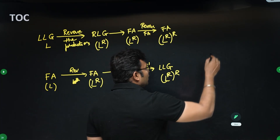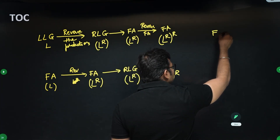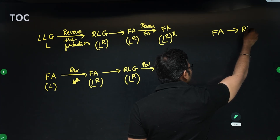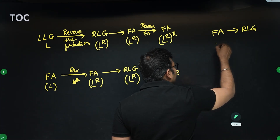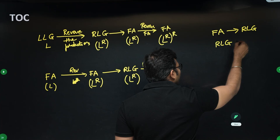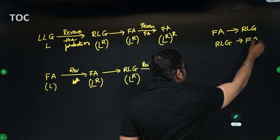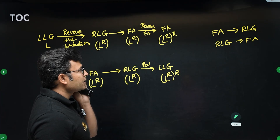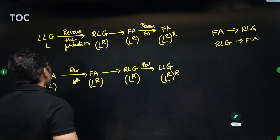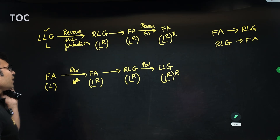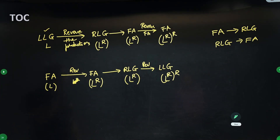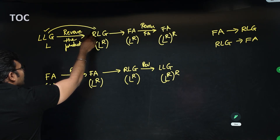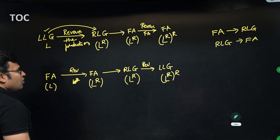So I have shown you two things: if a finite automata is given you can convert it to a right linear grammar, and if a right linear grammar is given you can convert it to a finite automata. This is straightforward. But if you have a left linear grammar and need to find the finite automata, it is not straightforward.